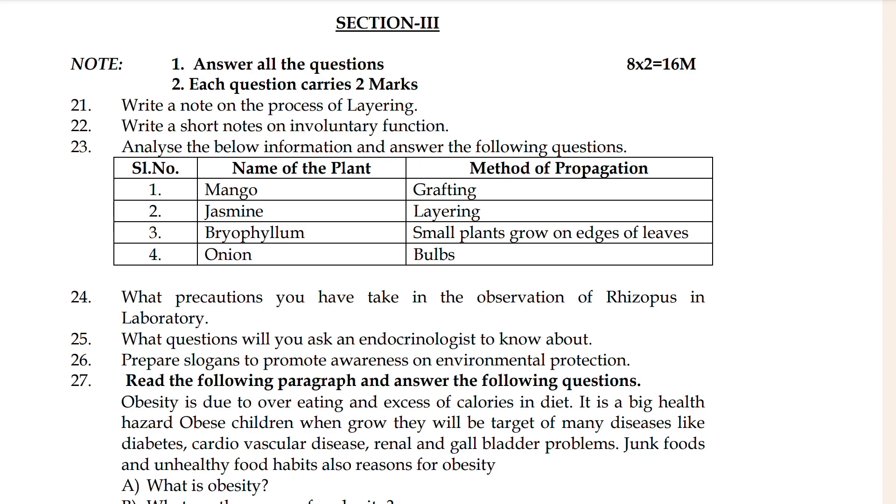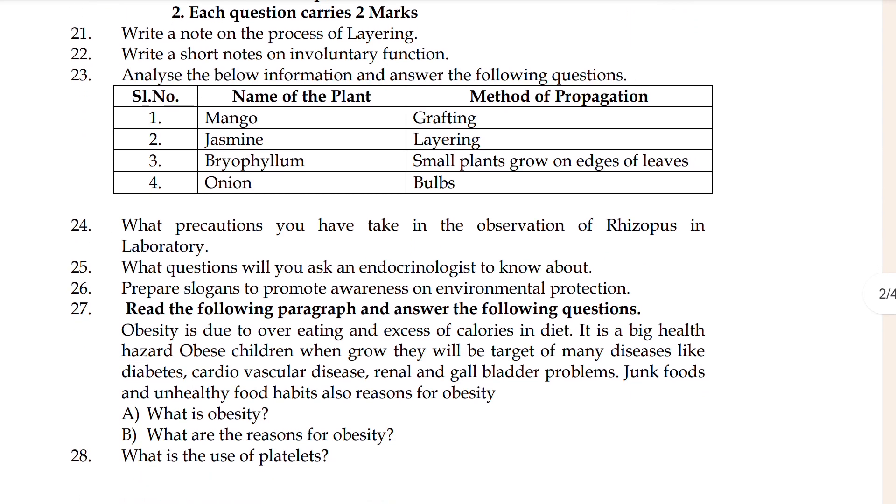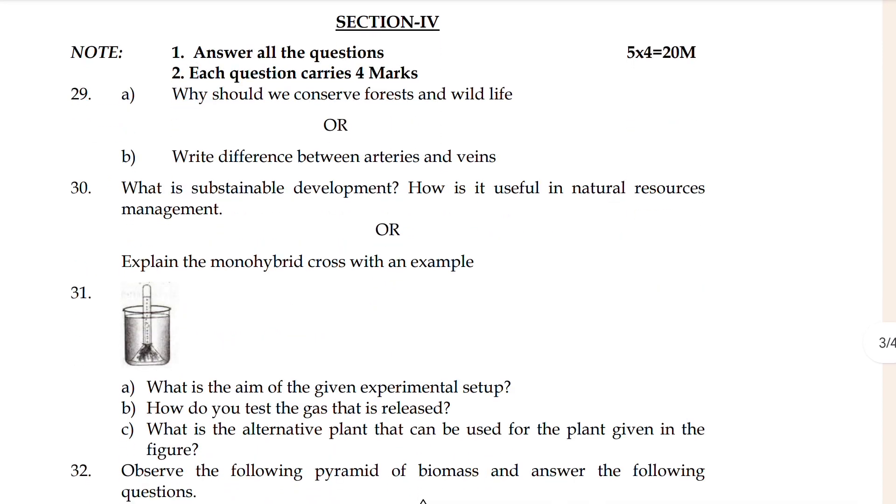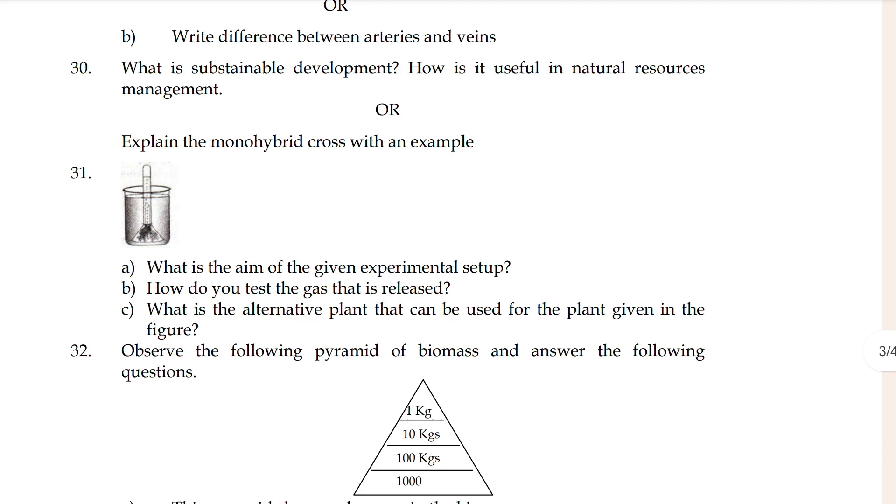Then Section 3. Write a note on the process of layering. Write a short note on involuntary function. These are important questions. Is it clear? Let's go next. Question 29: Why should we conserve the forest and wildlife? Difference between arteries and veins. 29B is important, 31 and 32.